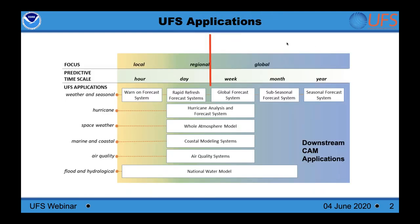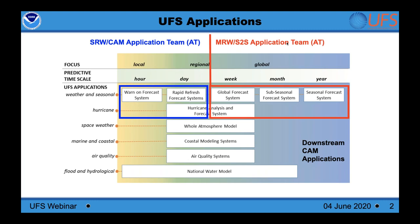The focus is principally on UFS applications at the short-term time scale of the next several hours to days — the Short Range Weather CAM application team, or SRW/CAM. These systems include the Rapid Refresh Forecast System or RRFS, the Warn-on-Forecast System, and other downstream CAM applications. The emphasis will remain on describing the RRFS and efforts toward transitioning to this unified approach.